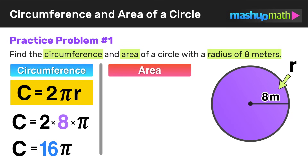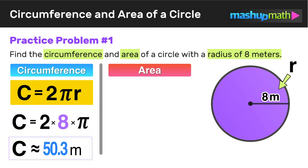If you want an exact answer, you take one further step and multiply 16 by pi, giving an approximate answer of 50.3 meters. So the circumference of the circle is approximately 50.3 meters.